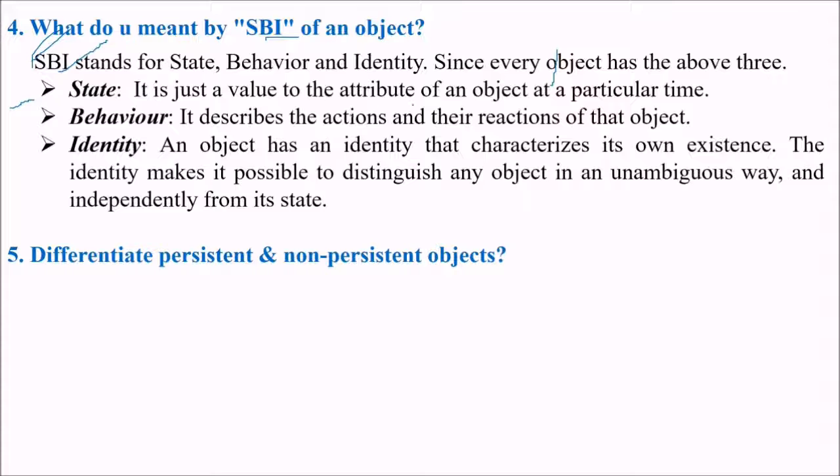State is just a value to the attribute of an object at a particular time. Behavior describes the actions and the reactions of that object. Identity means an object has an identity that characterizes its own existence. That identity makes it possible to distinguish any object in an unambiguous way independently from its state.